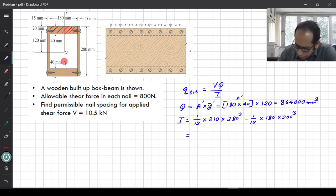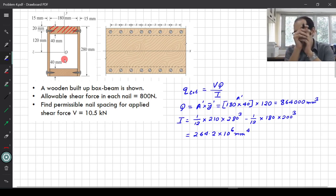That will give you, I have this number calculated already 264.2 times 10 raise to 6. You can calculate this one at your ease, mm raised to 4. The unit of area moment of inertia is length raised to 4.